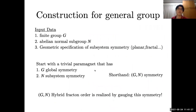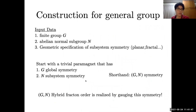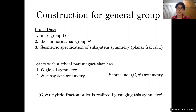The input data for this hybrid fracton model is a finite group G and any abelian normal subgroup N, along with the type of subsystem symmetry N — for example, planar or fractal. The symmetry protecting this is a G global symmetry and an N subsystem symmetry. G and N are not independent: if we take the N subsystem symmetry and take a product over all planes in one foliation, we get a global N symmetry, which is a normal subgroup of the G global symmetry. So G and N are intertwined, and I'll call this a (G, N) symmetry. The hybrid fracton order we construct can be realized by gauging this symmetry, and we do this explicitly in a lattice model.